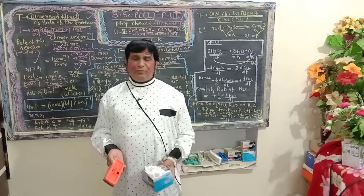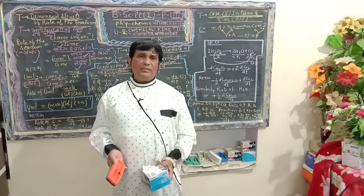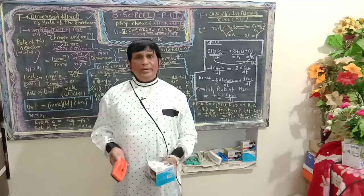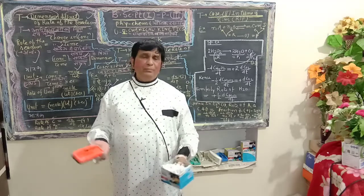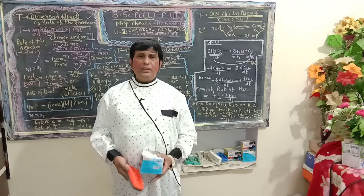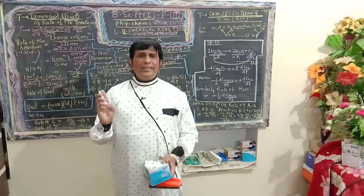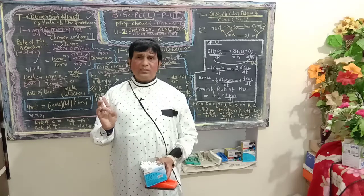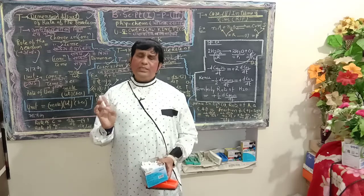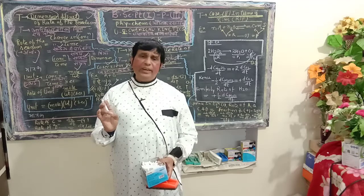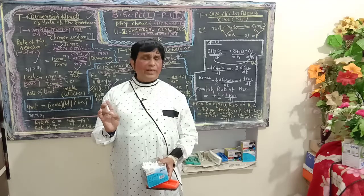Let me discuss a few more examples to distinguish dimension from unit. Distance and mass are quantities that denote dimension.